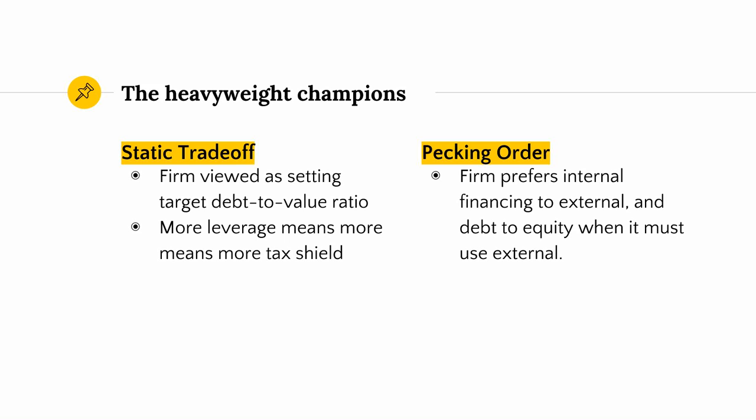This meant that more leverage — more debt they borrowed — meant that they would get tax shields; they would have to pay less taxes. So there was some balance that would maximize the value of the firm by finding the right level between debt and value. On the right side of the ring we've got pecking order theory — that firms prefer internal financing to external, and debt to equity when they must use external financing.